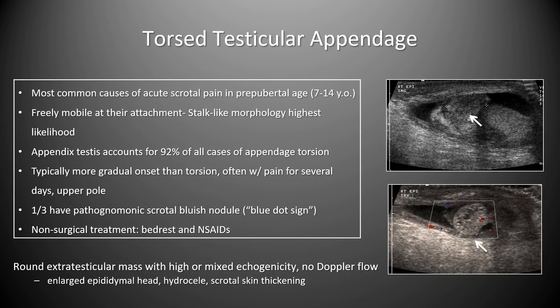This patient had torsion of the appendix epididymis. Torsed testicular appendages are the most common cause of acute scrotal pain in the prepubertal age group. The appendix testis accounts for about 92% of all appendage torsion cases. Patients typically present with gradual-onset pain for several days, usually limited to the upper pole. About a third have the pathognomonic blue dot sign. These patients are treated non-surgically with bed rest and NSAIDs.